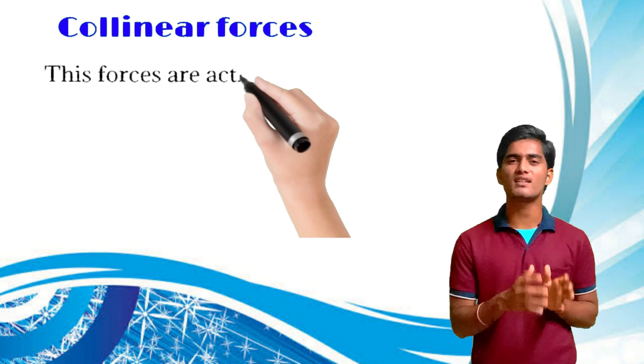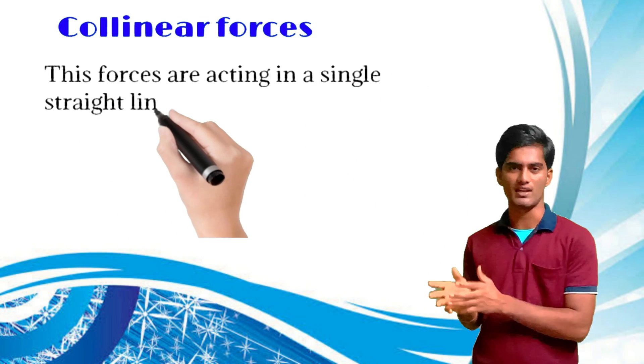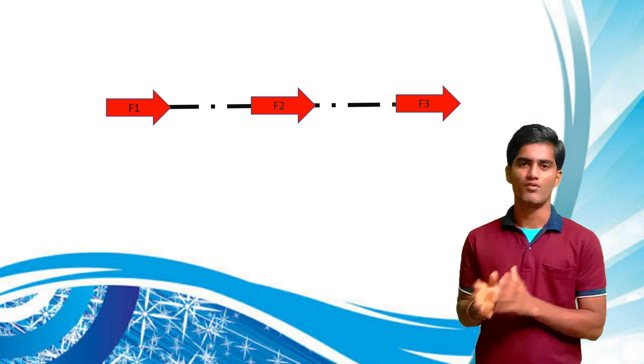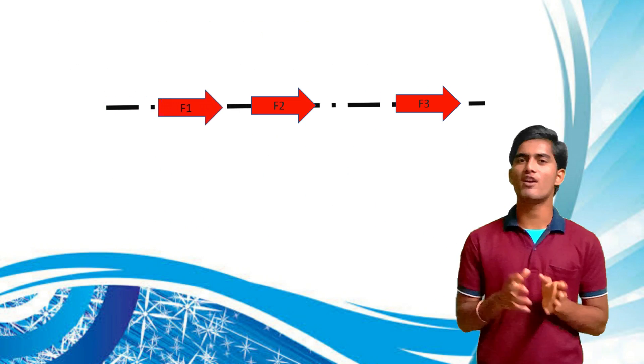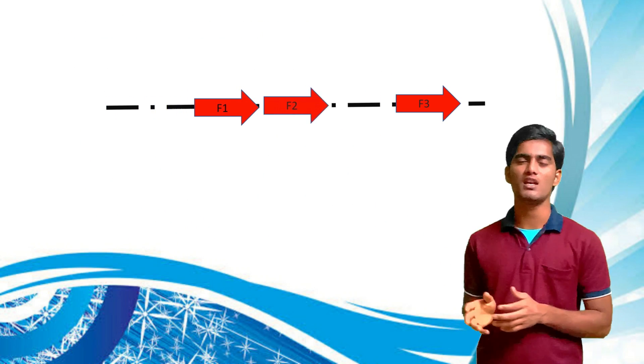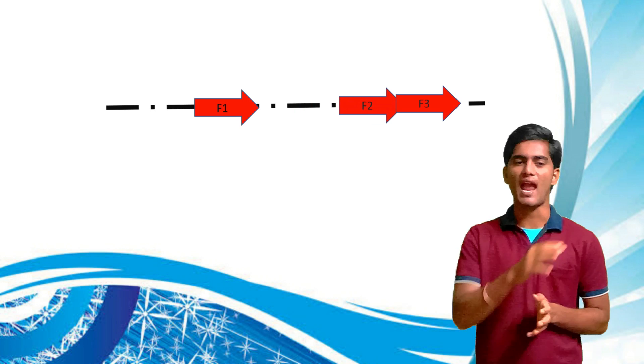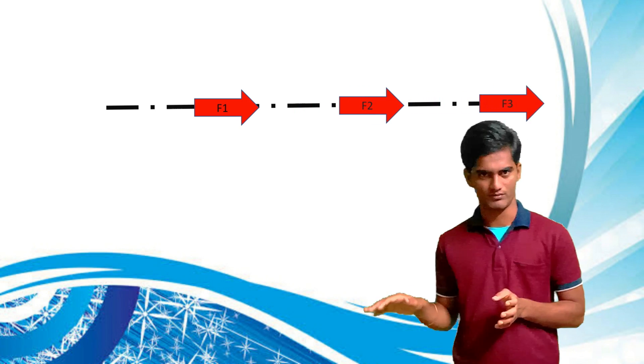Third one is collinear forces. These forces are acting in a single straight line. For example, F1, F2, F3 — these are all forces acting in a single line.